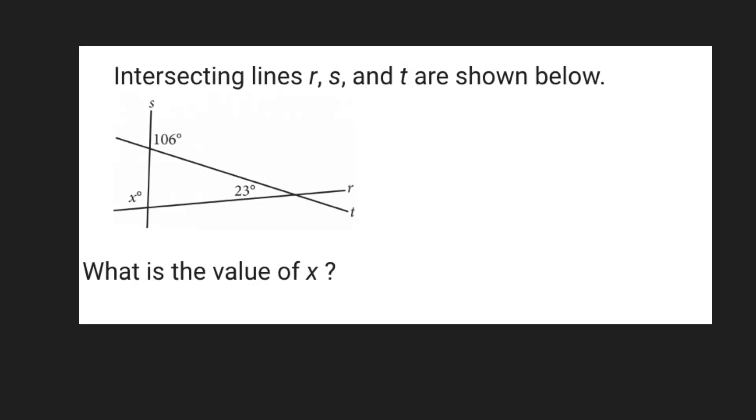It says intersecting lines R, S, and T are shown below. What is the value of X? Well, they give us two angle measures, right? We have this 106 degrees out here and 23 degrees out here.